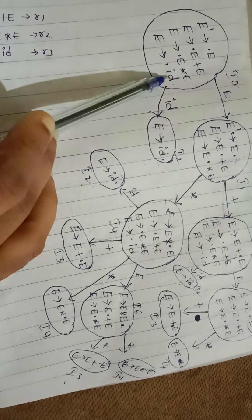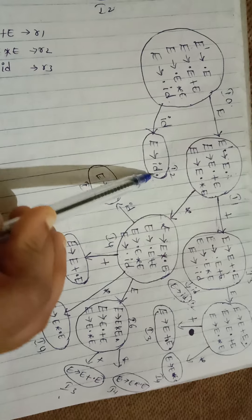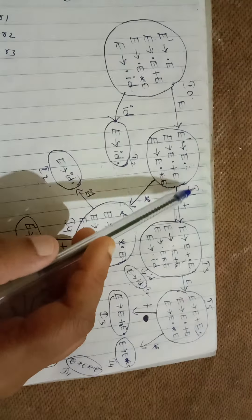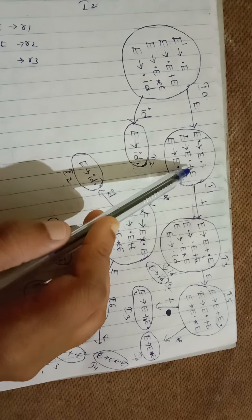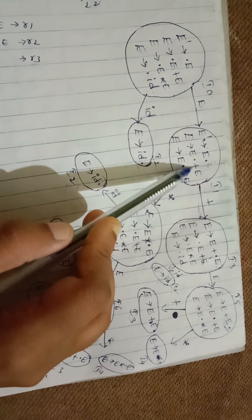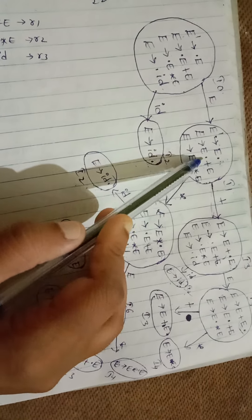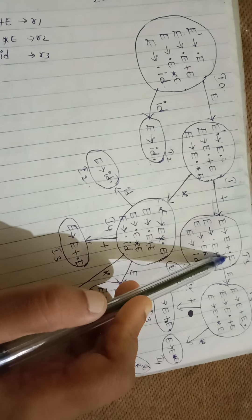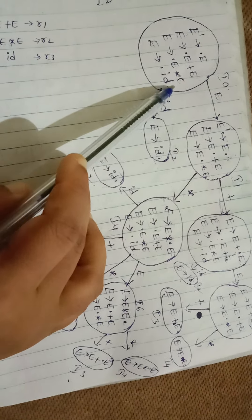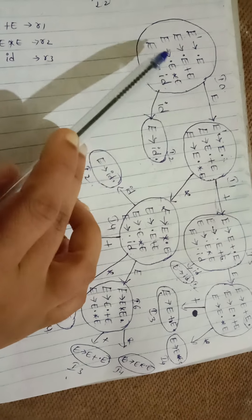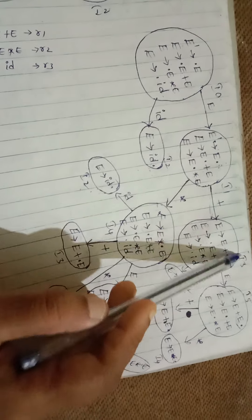From i1 on symbol plus, we get state i3: E → E plus •E, along with all productions of E with the dot at the start — E → •E plus E, E → •E star E, E → •id. From i1 on symbol star, we get state i4: E → E star •E, along with E → •E plus E, E → •E star E, E → •id.